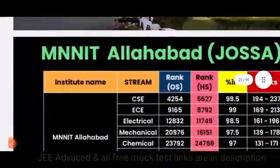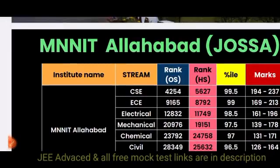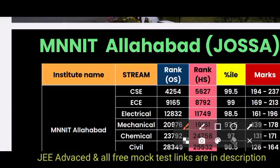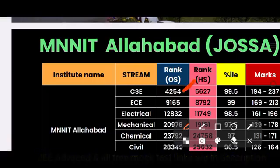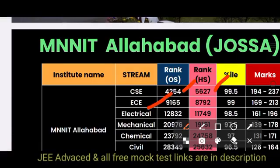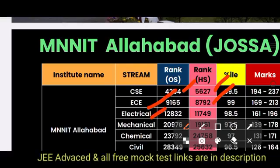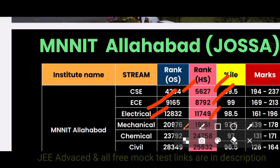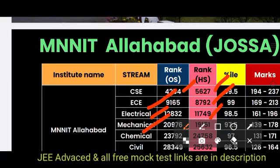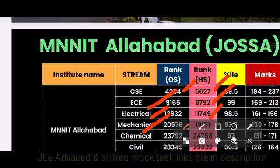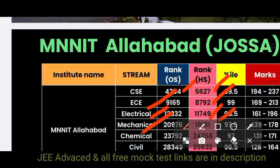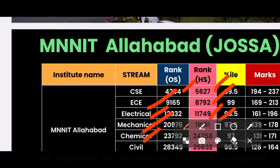For MNIT Allahabad through JOSA, Computer Science is 4,254 for other state and 5,627 for home state. ECE is 9,165 for other state and 8,792 for home state. Electrical is 12,832 for other state and 11,749 for home state. Mechanical is 20,976 for other state and 19,151 for home state. Ceramic is 23,000 for other state and 25,000 for home state. Civil is 28,000 for other state and 25,000 for home state.